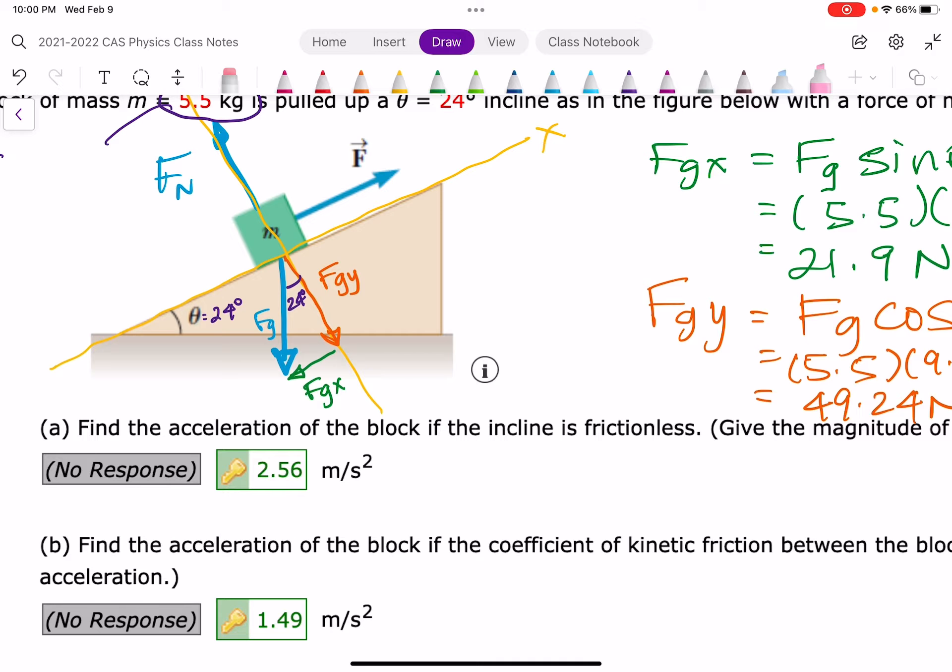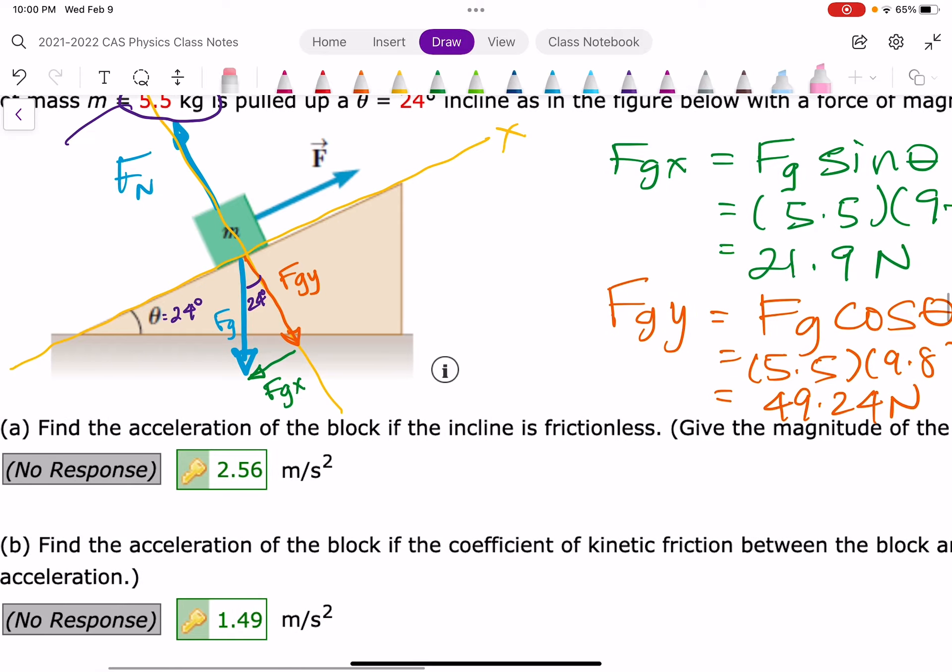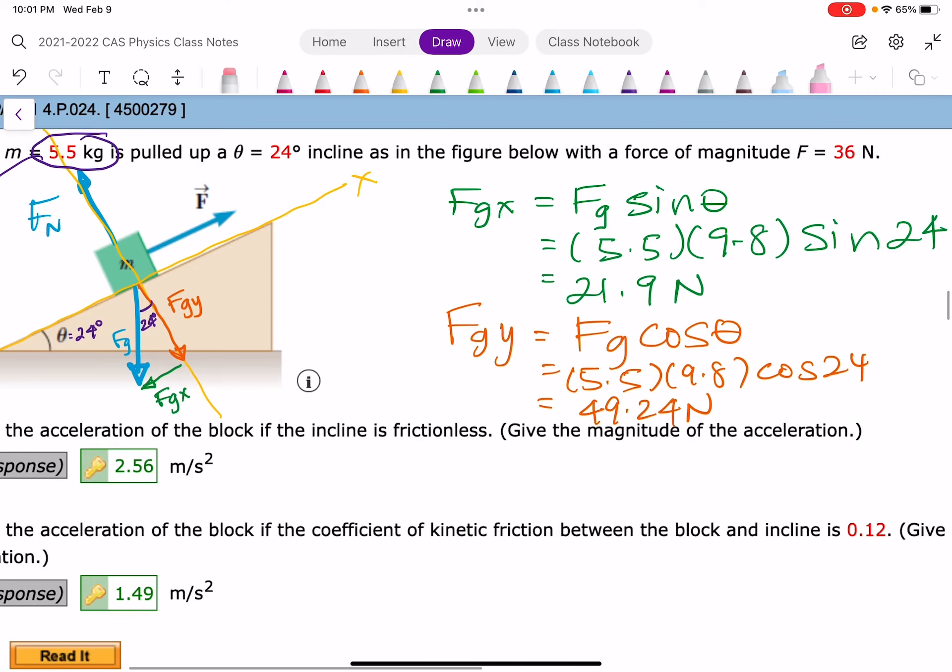FGX, straight down, is the hypotenuse of the triangle. And FGY and FGX add together and are perpendicular to each other and form this triangle. The angle in there is 24, same as the angle that is given to you. And if you solve that triangle, you'll see in the green and the orange, you can find the value of FGX and FGY.